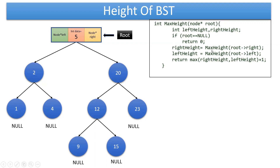right_height is assigned by calling the max_height function with root's right pointer as a parameter. This recursively calculates the height of the right subtree and stores the result in right_height. Similarly, calling max_height with root's left pointer calculates the height of the left subtree, storing the result in left_height. The final return statement uses the max function with right_height and left_height as parameters. It finds the maximum of those two, adds 1, and returns that as the height of the whole tree.